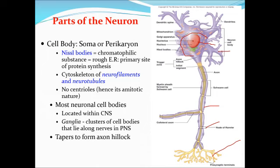The cytoplasm of the neuron has distinctive characteristics. Nissl granules are basophilic granules composed of rough endoplasmic reticulum. They are present in the dendrites but are absent from the axon hillock and the axon. Neurofilaments, also called microfilaments, along with microtubules are also present. In degenerative diseases like Alzheimer's disease, the neurofilament protein gets altered, resulting in the formation of neurofibrillary tangles. Most neuron cell bodies are located within the central nervous system, with ganglia — clusters of cell bodies — present along nerves in the peripheral nervous system.